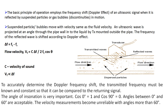The suspended particles or bubbles move with the same velocity as the fluid. An ultrasonic wave is projected at an angle through the pipe wall into the liquid by a transmitter mounted outside the pipe. The frequency of the reflected wave is shifted according to the Doppler effect and measured by the transducer using the pulse echo technique. The flow velocity is given by: vf = c × delta f / (2 × fd × cos θ), where c is the velocity of sound, delta f is the frequency shift, fd is the transmitted frequency, and θ is the angle of inclination of the transducer.